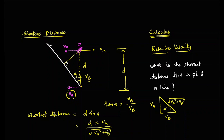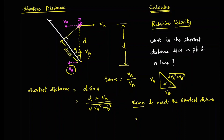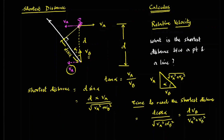Sometimes the question asks for the time to reach the shortest distance. This is also easy once you know the concept. The distance traveled until the closest approach is d·cos(alpha), and time equals distance over speed, so time = d·cos(alpha) / √(va² + vb²) = d·vb / (va² + vb²). I hope you practice this before attempting the main question.